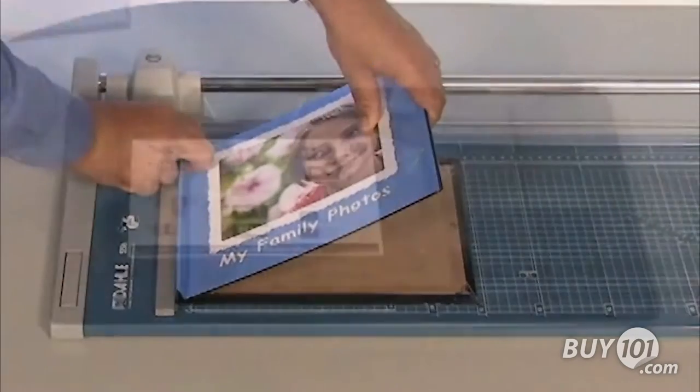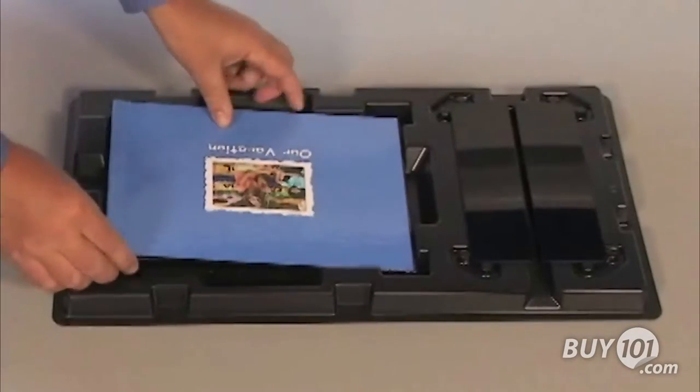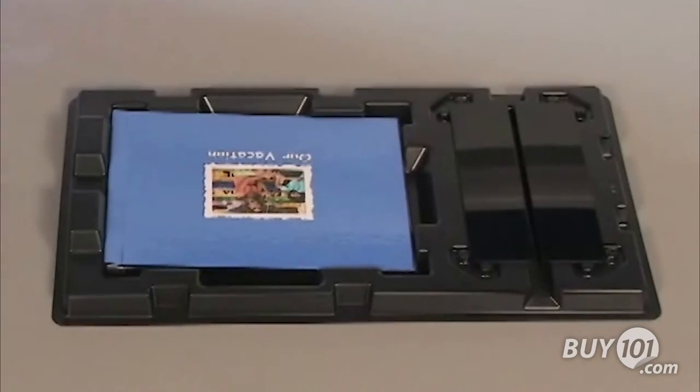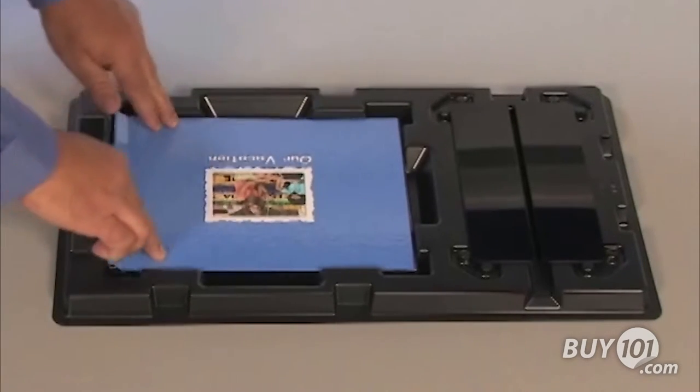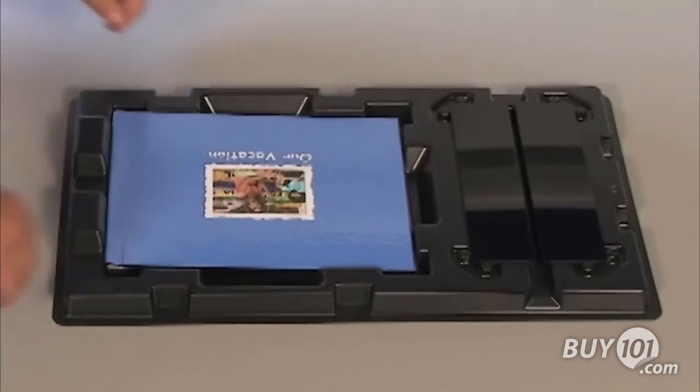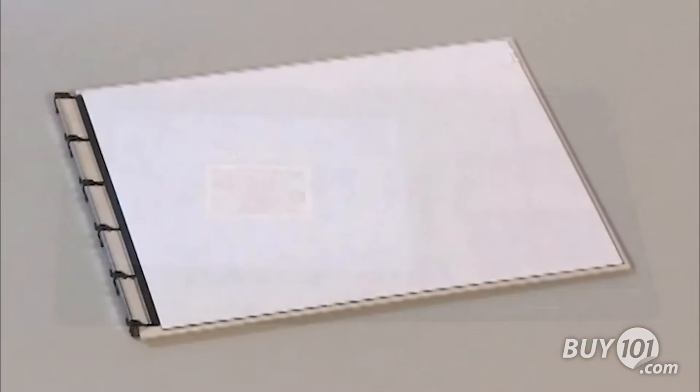Attach the binder. Place the cover into the tray on the assembly jig with the back cover facing up and the spine on the left. Press down firmly on all four corners of the cover to fully seat it in the tray. Get one book binder from the assembly kit. Do not remove the cardboard from inside the binder yet.